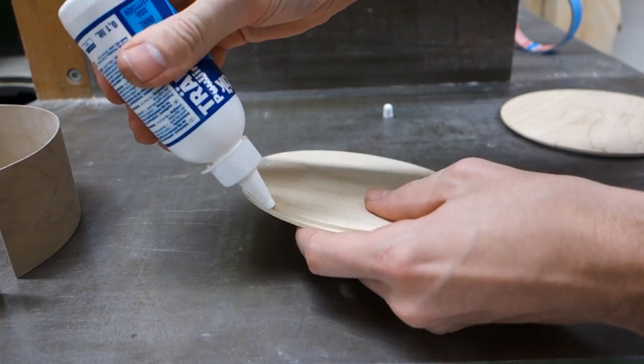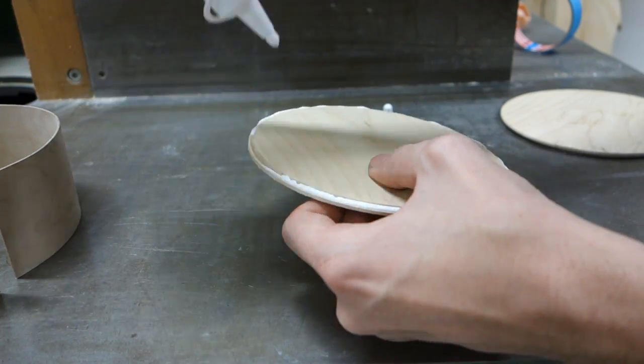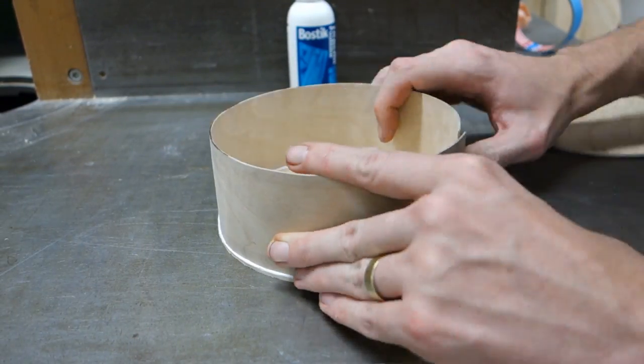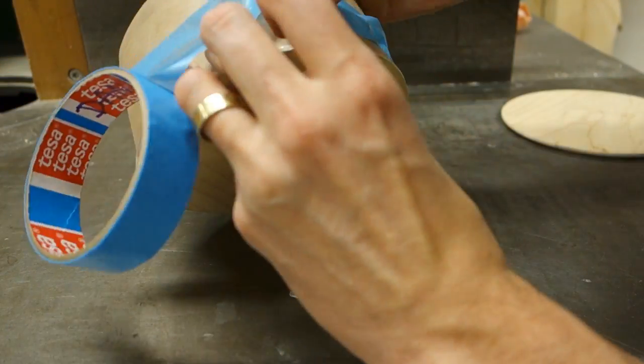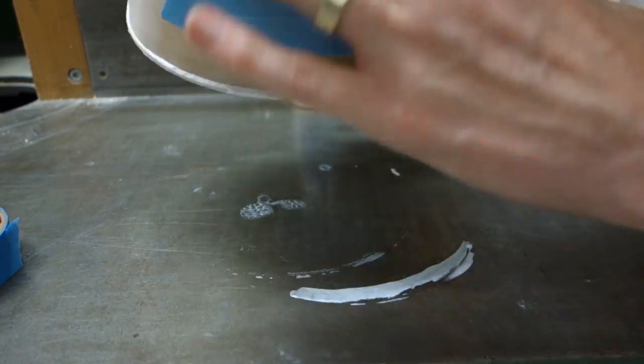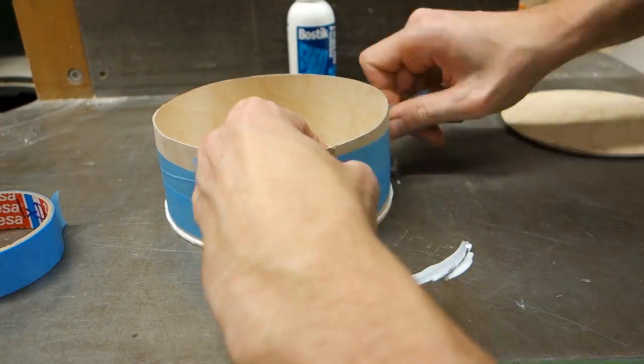This is where the shoulder we turned down on the top and the bottom will come into play. Add a bead of glue around the shoulder of the bottom piece and fit the bent plywood in there. This will give a bigger surface for the glue to stick to, and hide the layered edge of the plywood. Keep it in place with some masking tape to make sure the edges meet properly.